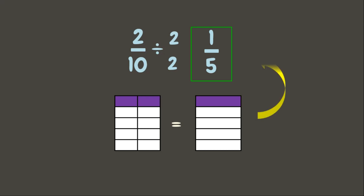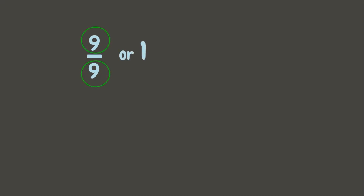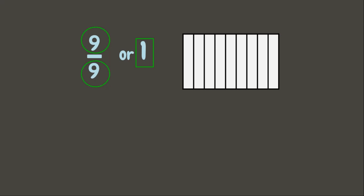Now let's have more examples. How about nine-ninths? How are we going to simplify this? We can see that the numerator and the denominator are the same — they are both nine. If you encounter this kind of fraction, it is equal to one. Let's draw a representation. A whole divided into nine equal parts where nine parts are taken is one whole. The line between the numerator and the denominator also represents division, meaning nine divided by nine equals one.